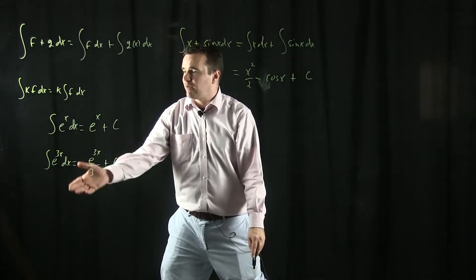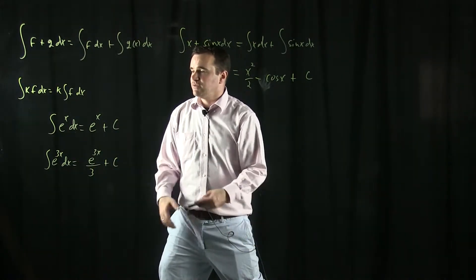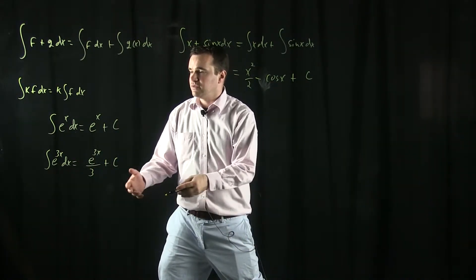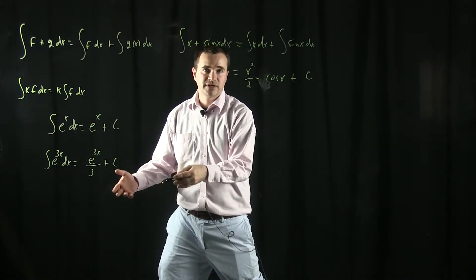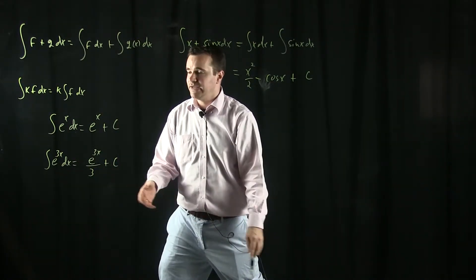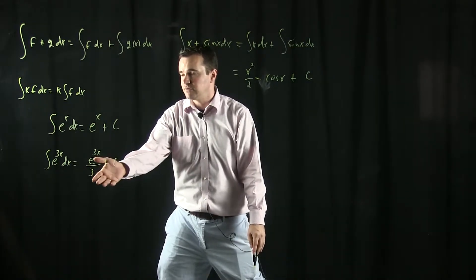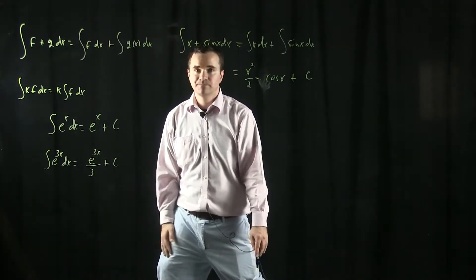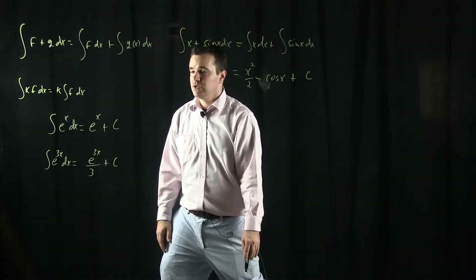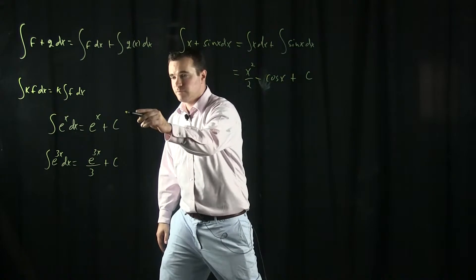This works no matter what the number is. If you had e^(kx) dx, the anti-derivative is going to be e^(kx)/k + c.